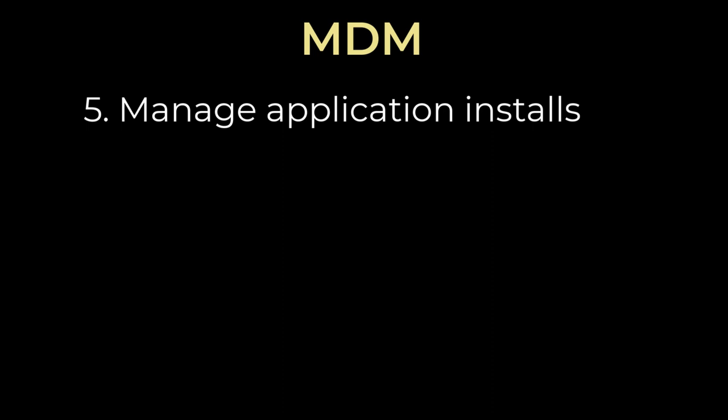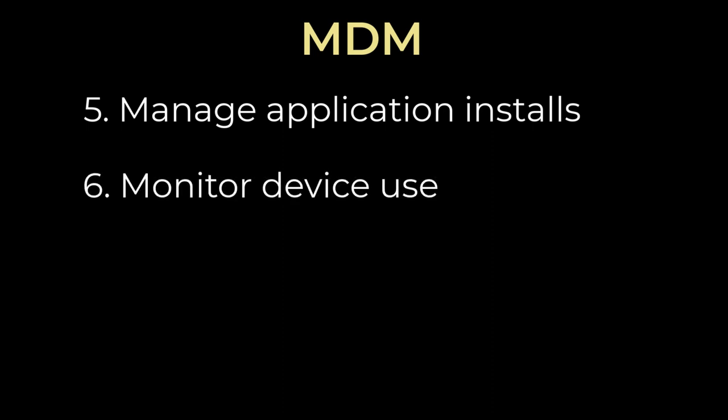Fifth, manage application installation. MDM can be used to manage application installation on mobile devices. This ensures that only approved apps are installed on the device, reducing the risk of malware and other security threats. MDM can also be used to remove apps that are no longer needed or pose a security risk. Sixth, monitor device usage. MDM can be used to monitor device usage, including tracking device location, network usage, and app use. This information can be used to identify potential security threats and take appropriate action.